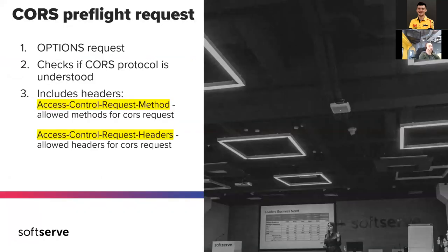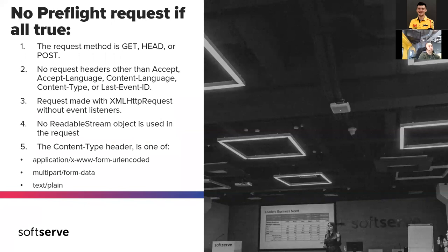CORS consists not only of one request — it also has a preflight request. It's an OPTIONS request that checks whether the server understands the CORS protocol. It includes two headers: 'Access-Control-Request-Method' and 'Access-Control-Request-Headers'. The preflight request can be skipped if all these conditions are true: the request should be GET, HEAD, or POST; there should be no request headers other than the allowed list; and the request should be made from browser JavaScript XMLHttpRequest without any event listeners, meaning you don't need to expect a result — no subscribers. Even if you add an event listener on your observable, it will send the preflight request.